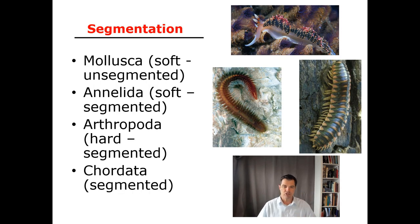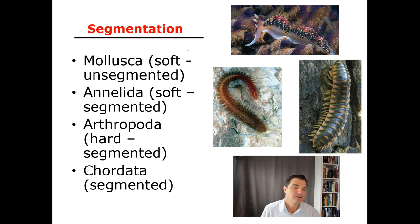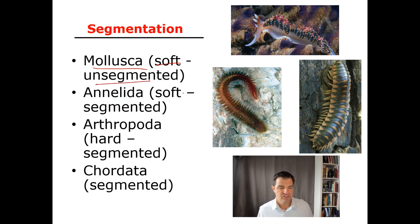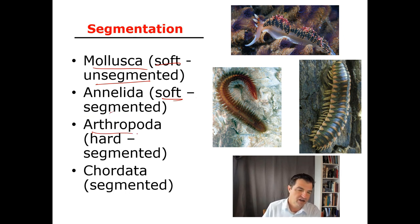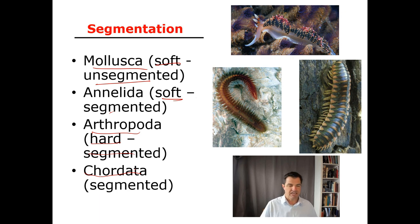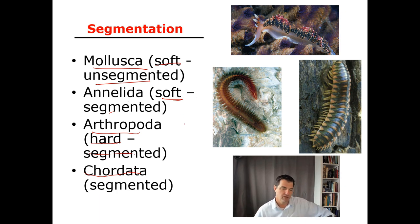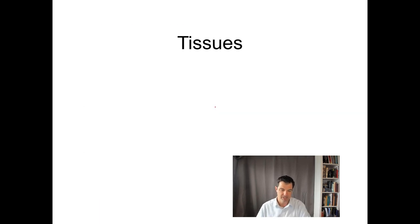The other classification characteristic is segmentation — do they have repeated body segments or not? Mollusca have soft, unsegmented bodies. Annelids have soft, segmented bodies. Arthropods have a hard body and are segmented. Chordates — things like us — have a soft outside but an internal skeleton, and they also have a segmented body.